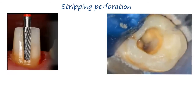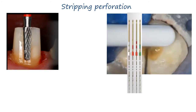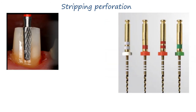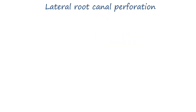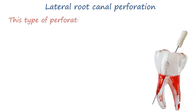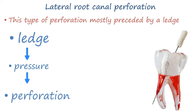Stripping perforation mostly occurs during use of Gates Glidden inside the canal, during post-space preparation using large drills, or during use of large tapered files with a brushing motion toward the furcation area. Lateral root canal perforation is mostly preceded by a ledge: ledge, then pressure at the curvature level, then perforation.